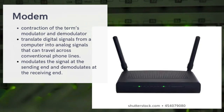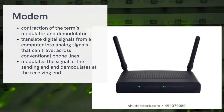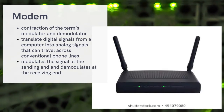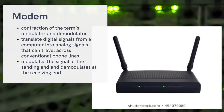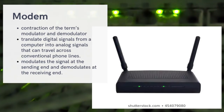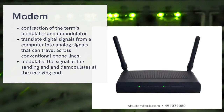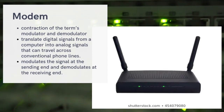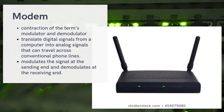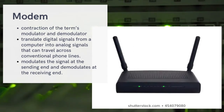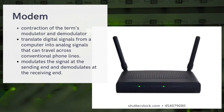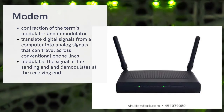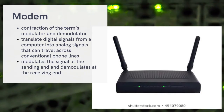We have the digital signal, which is the signal understood only by our computers and devices. We also have the analog signal, which is the signal used by the internet. When a signal leaves our device, it is an analog signal. The internet service provider sends an analog signal which passes through the modem. The modem demodulates that analog signal, and when it comes out of the modem, it becomes a digital signal.